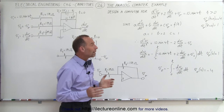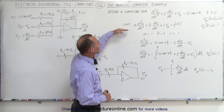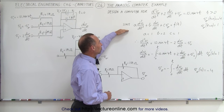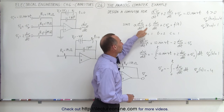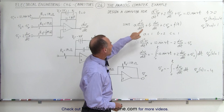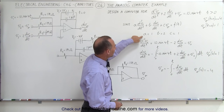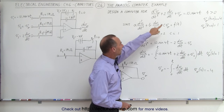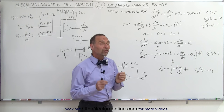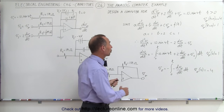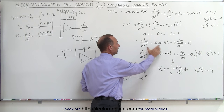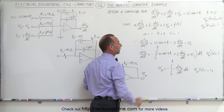From the previous video, this is the general format of the differential equation with constants a, b, and c. Looking at our equation, a equals one, b equals two, and c equals one. Solving this differential equation for the second derivative of the output voltage with respect to time gives us that expression.